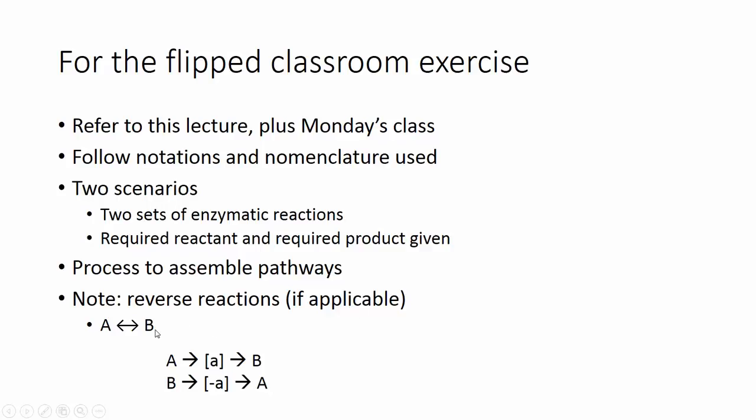If we have A double arrow, you know, A going to B and B can go back to A, we would make two reactions of that. We would make reaction A, which is A going to B, then reaction negative A, which is B going to A. So just this one notation actually gives us two reactions.